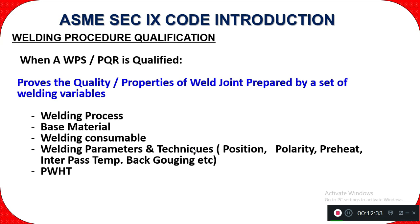When a WPS and PQR is qualified, it proves the quality and properties of the weld joint given a specific set of welding variables. It means the welding process is acceptable, the base material is acceptable, the welding consumable is in correct condition, and the welding parameters and techniques used — such as polarity, preheat, interpass temperature, back gouging, and PWHT — are all acceptable per Section 9. When everything is correct, then the WPS is qualified.